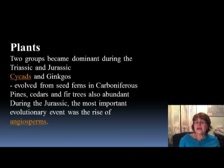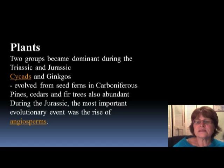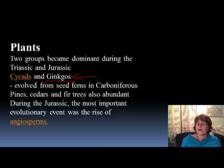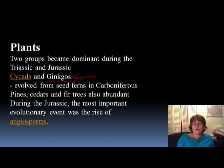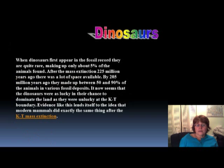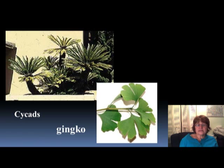For plants, two groups became dominant during the Triassic and Jurassic: the cycads and the ginkgoes. Ginkgoes are still around today, which is why they are called living fossils — they started around 220 million years ago. They seem to have evolved from seed ferns in the Carboniferous. Pines, cedars, and fir trees were also very abundant during the Jurassic, and the most important development of the Mesozoic was the appearance of the angiosperms — the flowering plants.